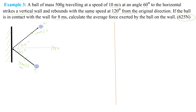From position one, the velocity will have a component vertically upwards, which is going to be 10 sin 60 degrees, and also a component normal to the wall, which will be 10 cos 60 degrees.